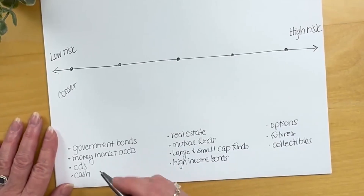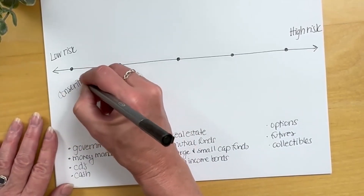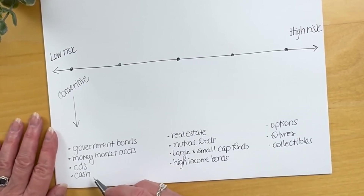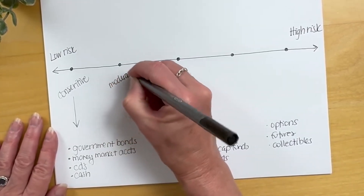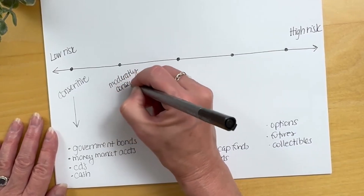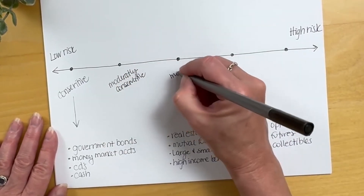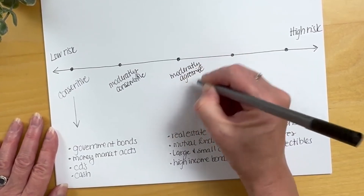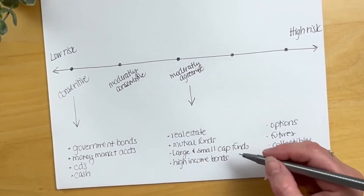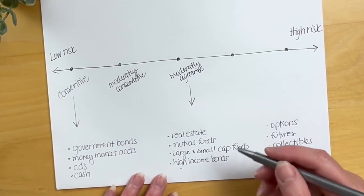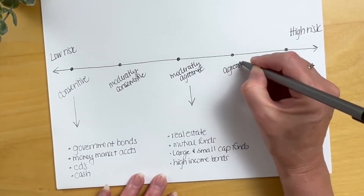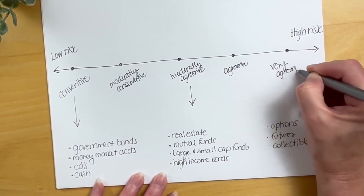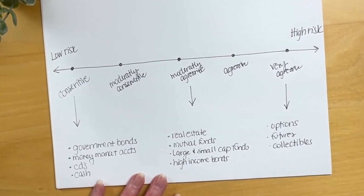Risk levels are often categorized in five different areas: conservative, which might include government bonds, money market accounts, CDs, and cash; moderately conservative and moderately aggressive, which includes real estate, mutual funds, large and small caps, as well as high income bonds; and aggressive, which includes options, futures, and collectibles.